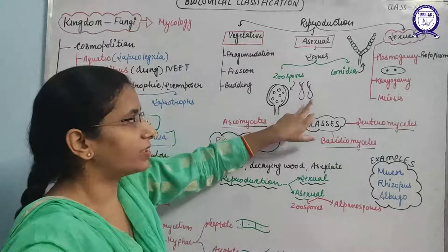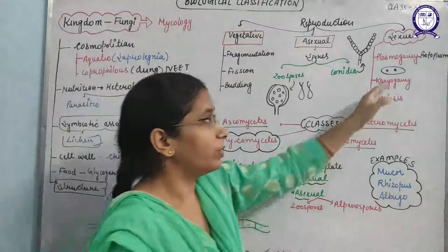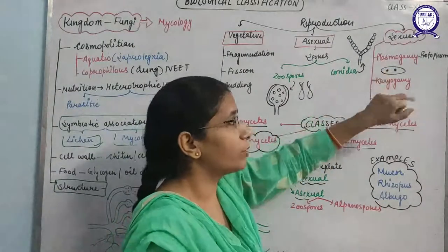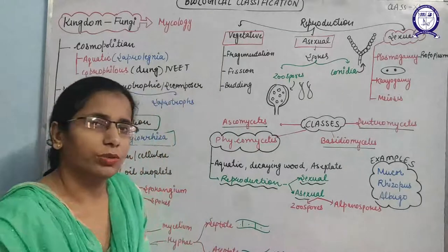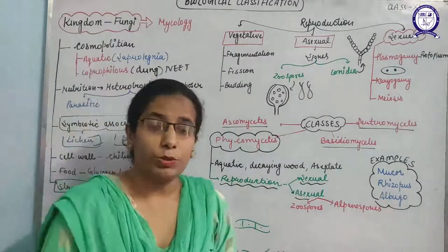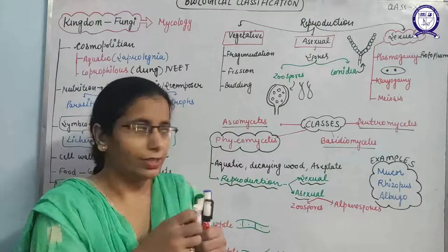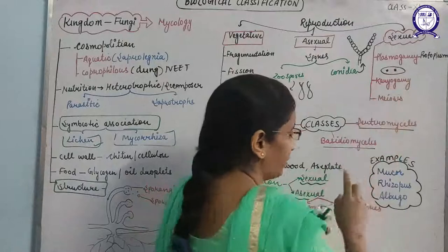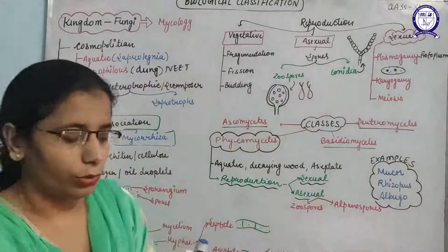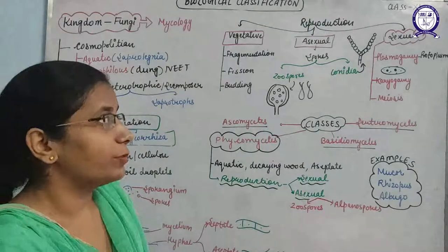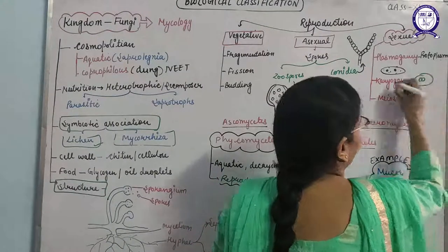The second type of asexual spores are zoospores, formed inside the zoosporangium. For sexual reproduction, there are three steps: plasmogamy, karyogamy, and meiosis. Plasmogamy means fusion of the protoplasm — when two hyphae join together, the protoplasm of both fuses in such a way that the nuclei come in contact but do not yet fuse. This fusion of protoplasm is known as plasmogamy.